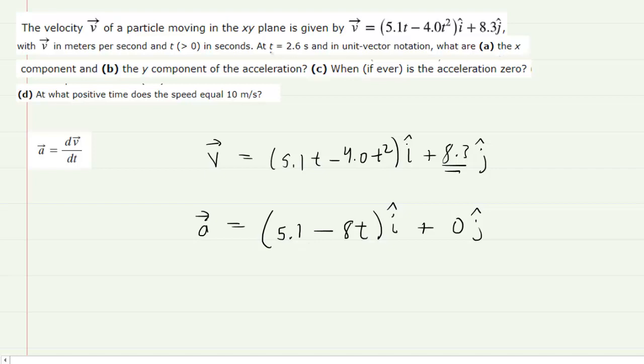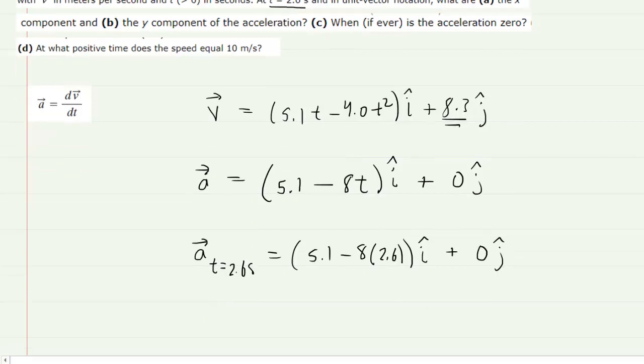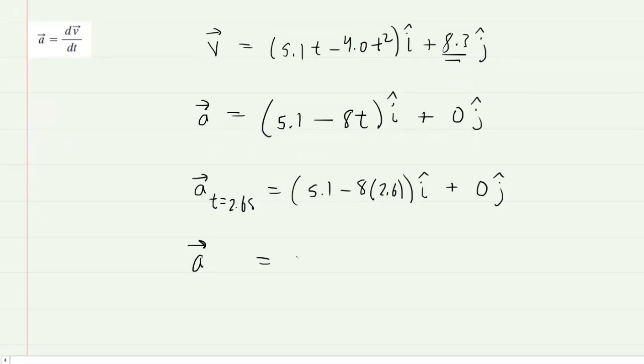So for part A, what we'll do is plug in the time of 2.6 seconds. So we can say the acceleration at a time of 2.6 seconds is equal to 5.1 minus 8 times the 2.6. And then again, the acceleration in the y direction is 0. So let's pick up our calculators and do 5.1 minus 8 times 2.6, and we will get an acceleration of negative 15.7. This will come out in meters per second squared.